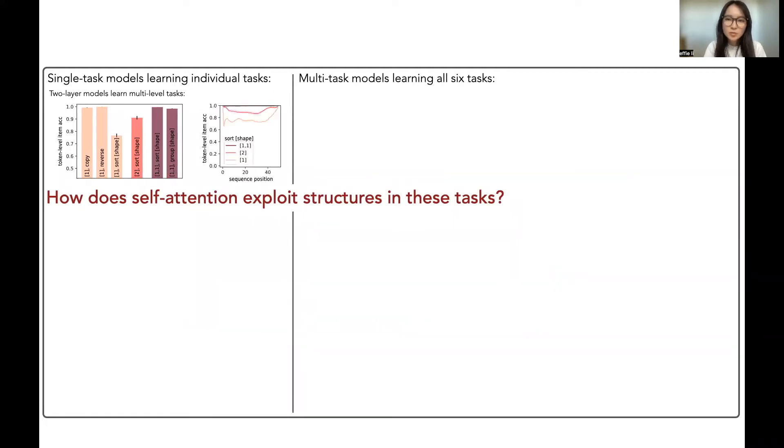The two-layer models predicted accurately across sequence positions, but the single-layer models only learned items that always appear early or late in the output sequence.